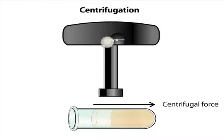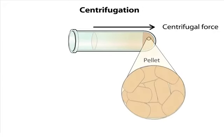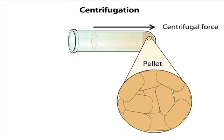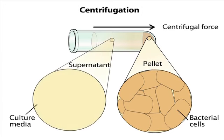During this short, low speed spin, the largest and densest materials sediment first, forming a pellet at the bottom of the tube. Here, the pellet contains primarily unbroken cells, which are our bacterial cells. The culture media has then separated and remains as a supernatant.